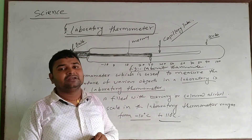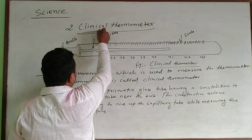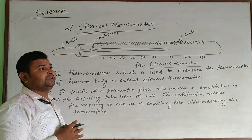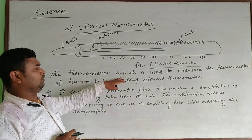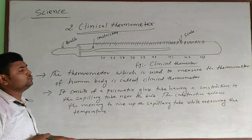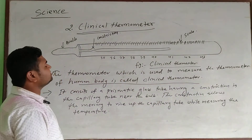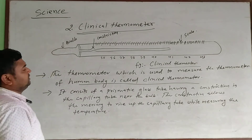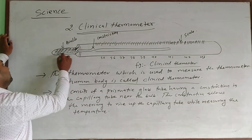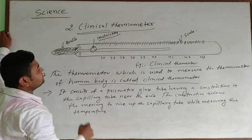Now let's talk about the clinical thermometer. The clinical thermometer is a thermometer which is used to measure the temperature of the human body. This clinical thermometer consists of mercury present in a bulb and in a capillary tube.